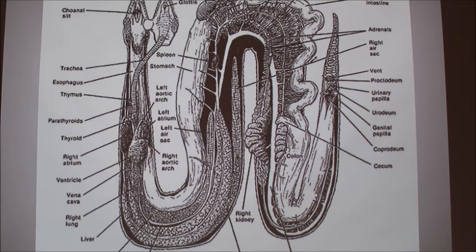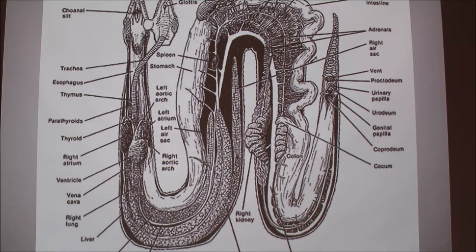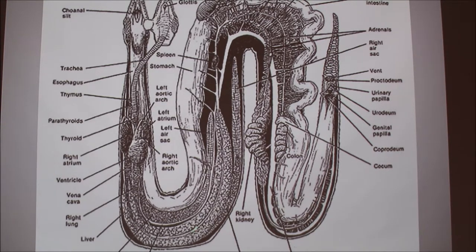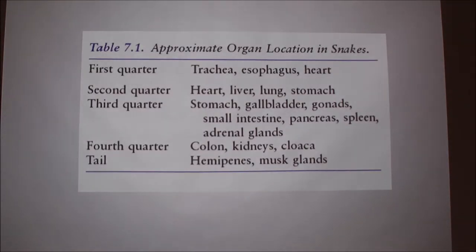I learned that snake anatomy is very similar to your usual animals as well as humans. The only difference is it's all very linear and kind of shifted to fit in a straight line — it's all squeezed in there. For example, one good example is the lung: you can see the right lung is down here but the left lung is slightly higher, and also one lung is smaller than the other.